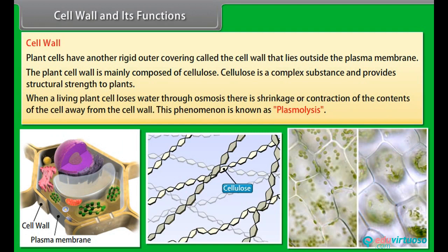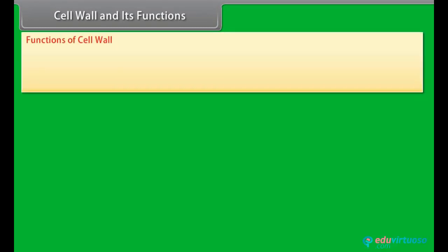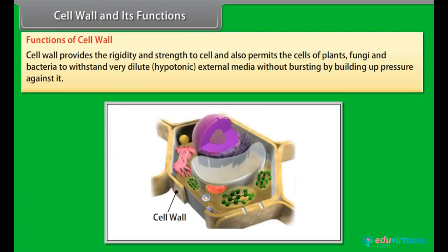When a living plant cell loses water through osmosis, there is shrinkage or contraction of the contents of the cell away from the cell wall. This phenomenon is known as plasmolysis. The cell wall provides rigidity and strength to the cell and also permits cells of plants, fungi, and bacteria to withstand very dilute hypotonic external media without bursting, by building up pressure against it.